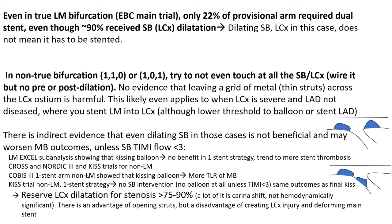In the left main arena, the left main XL sub-analysis showed that kissing balloon inflation has no benefit in the one-stent strategy, and there was a trend to more stent thrombosis. All this suggests you should reserve left circumflex post-dilatation for stenosis over 75–90%, even more so in the case of non-true bifurcation at baseline. Side branch post-dilatation or kissing balloon may be harmful in non-true or non-complex bifurcation unless the side branch occludes, because that dilatation or kissing may distort the main branch stent.